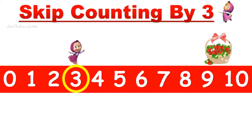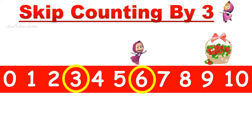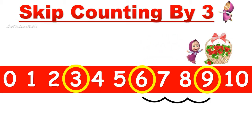Now Masha is on number three. We do skip counting by three again to move forward: one, two, three — the number is six, so Masha jumps on number six. Again skip counting by three: one, two, three — the number is nine, and Masha jumps to number nine and gets her basket of strawberries.